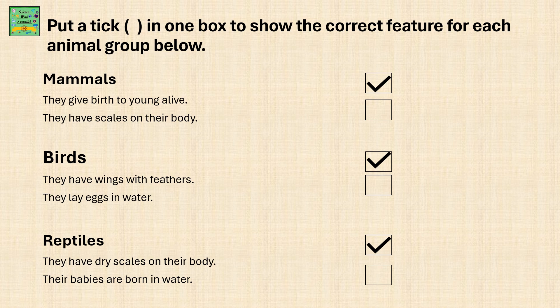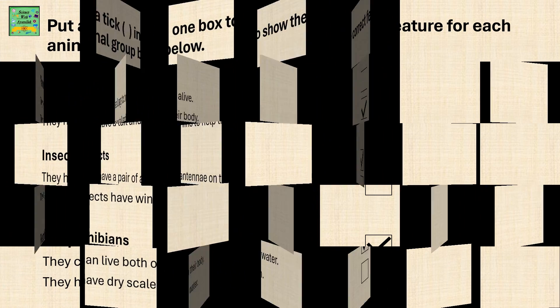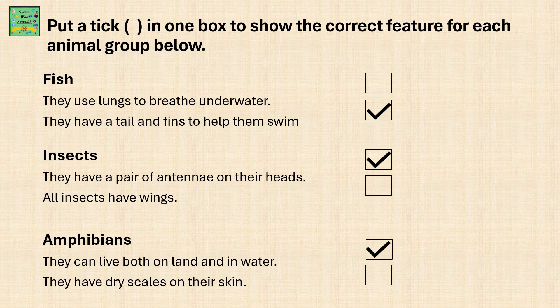Reptiles. They have dry scales on their body — that is true. Their babies are born in water — that is not true. Fish. They use lungs to breathe underwater — that is not true. They have a tail and fin to help them swim — that is true, so there is a tick.